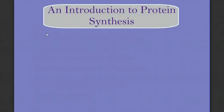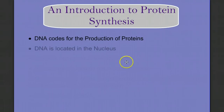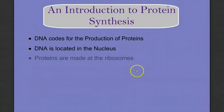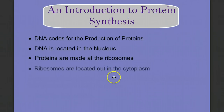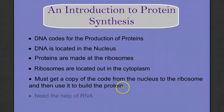This video will serve as our introduction to protein synthesis. DNA codes for the production of proteins, and DNA resides in the nucleus. However, proteins are made at the ribosomes, which are out in the cytoplasm. So we must get a copy of the code from the nucleus to the ribosomes and then use it to build proteins. This is going to require the help of RNA.